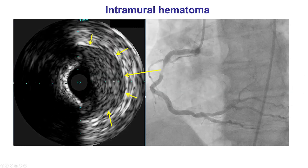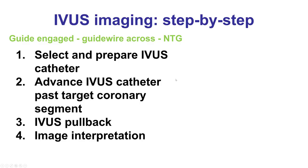Another potential finding after stenting is that of an intramural hematoma. This was an intermediate lesion after stenting of the proximal RCA, and IVUS demonstrates a collection of blood in the subintimal space. This is an intramural hematoma that requires stenting distally and then over that area of hematoma.